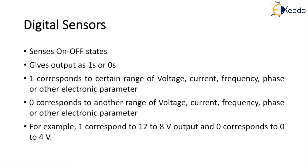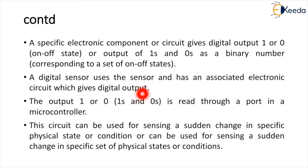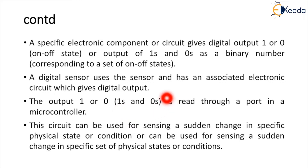A digital sensor is a specific electronic component that uses the sensor and associated electronic digital circuit to produce zeros and ones. It gives the digital output — one means on and zero means off — as a binary number corresponding to a set of on and off states. These ones and zeros are read through a port in a microcontroller.